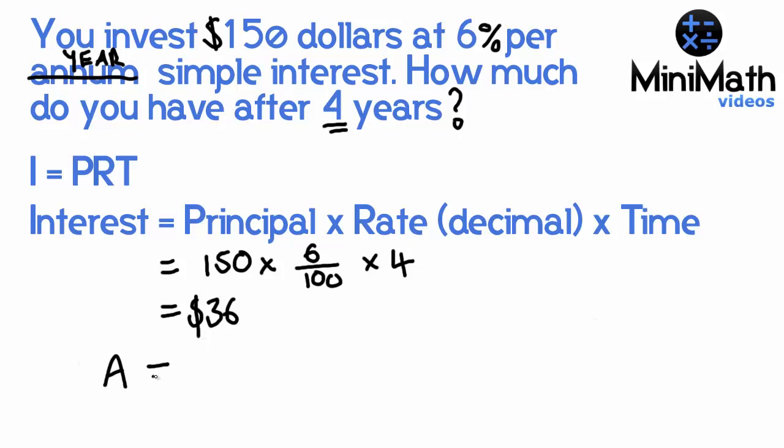Now, to work out the final amount after four years, you do the principle plus the interest. The principle is $150 and the interest is $36. After four years, you'd have $186.